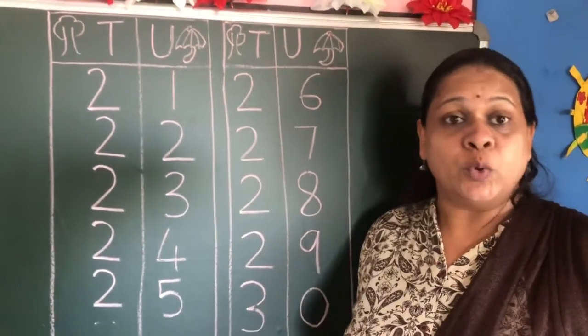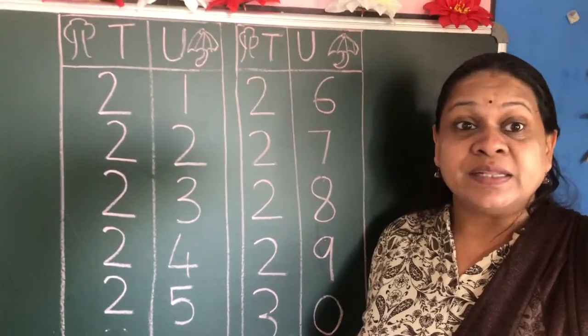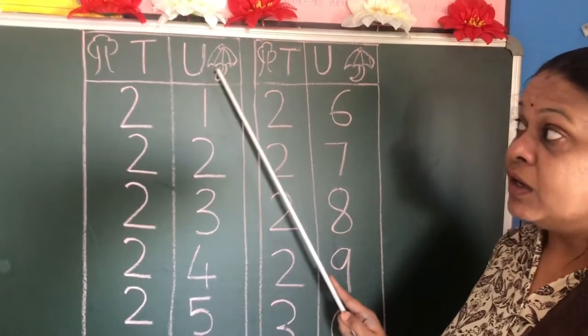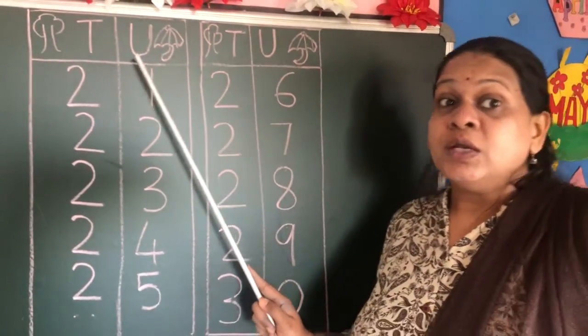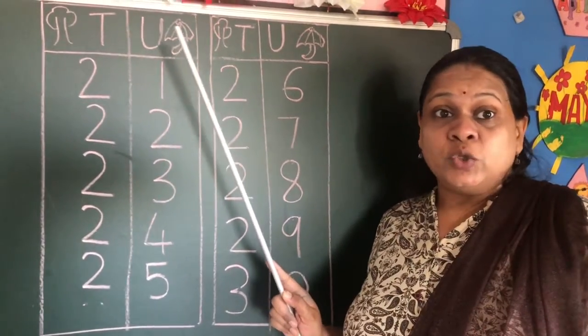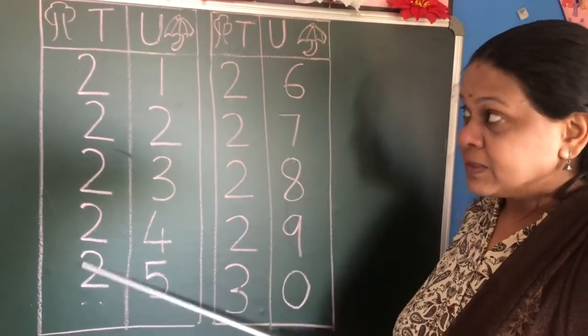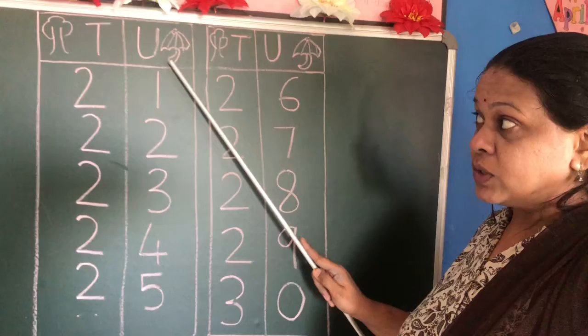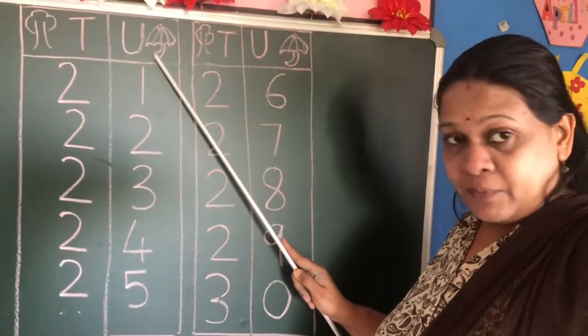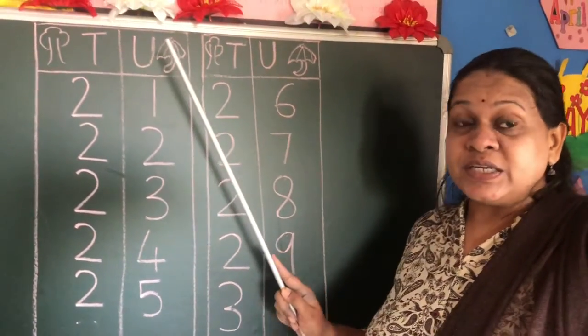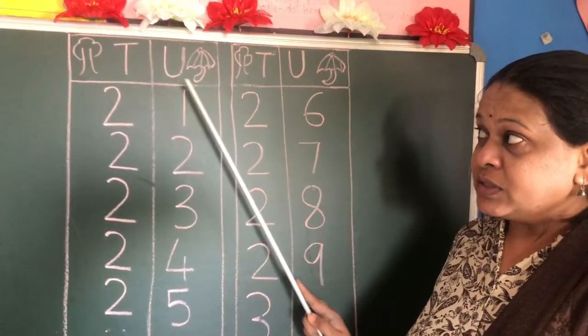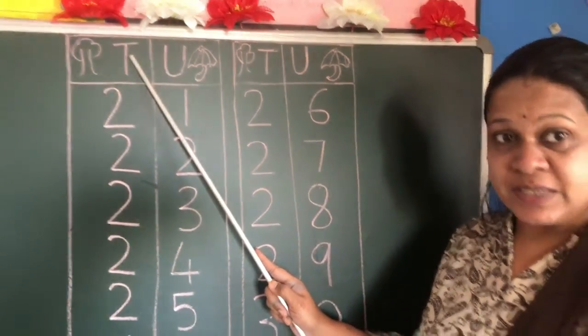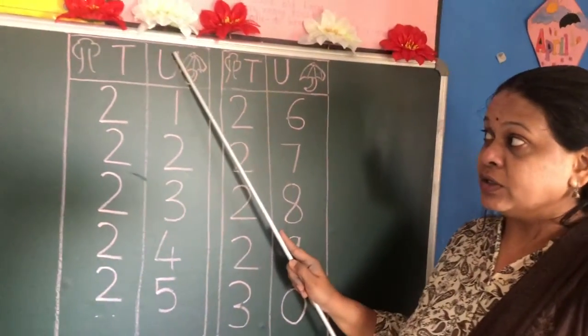Only one digit numbers from 1 till 9 come in the unit place. But when I taught you 10, 1 was in the tens place and 0 was in the unit place, that is under the umbrella. Till 20 also we have done in that way. Only 20, the 2 was in the tens place or under the tree, and 0 was under the umbrella, that is in the unit place.